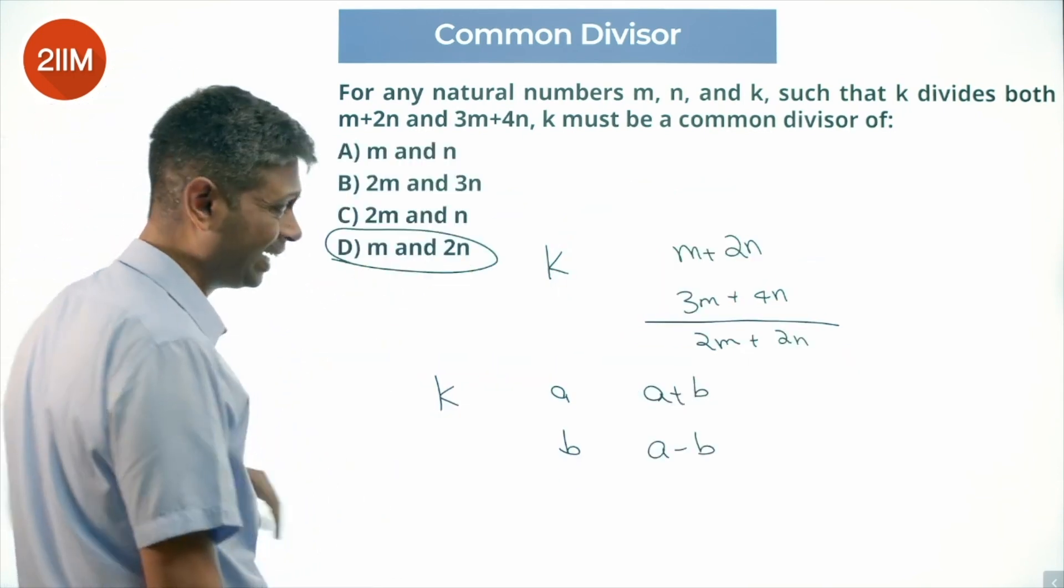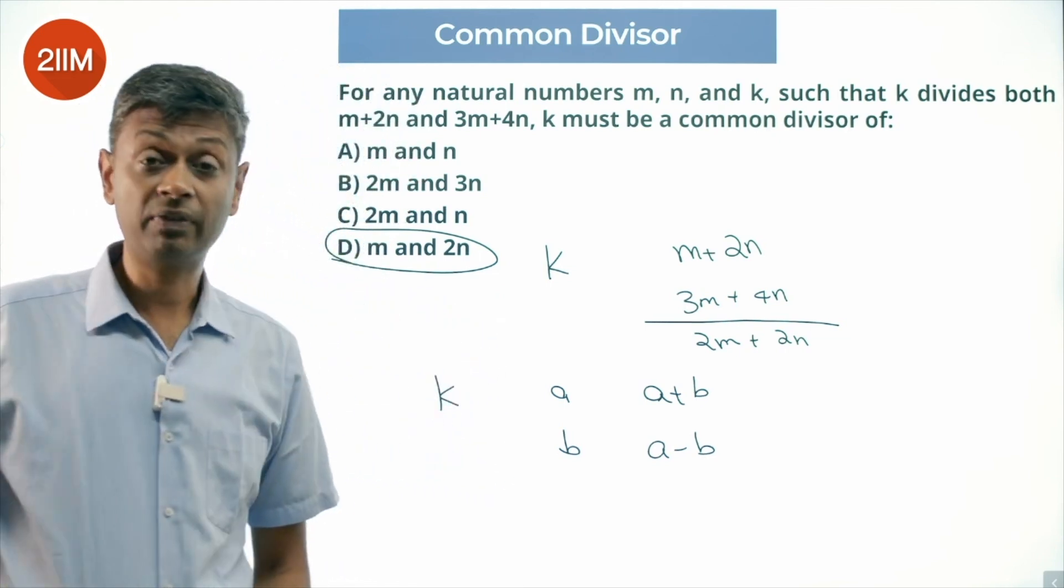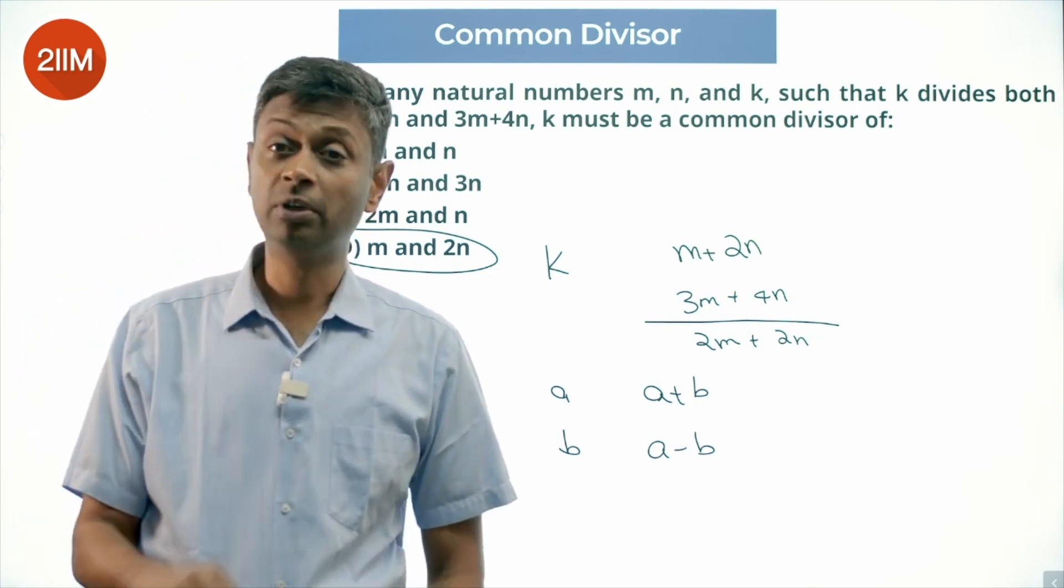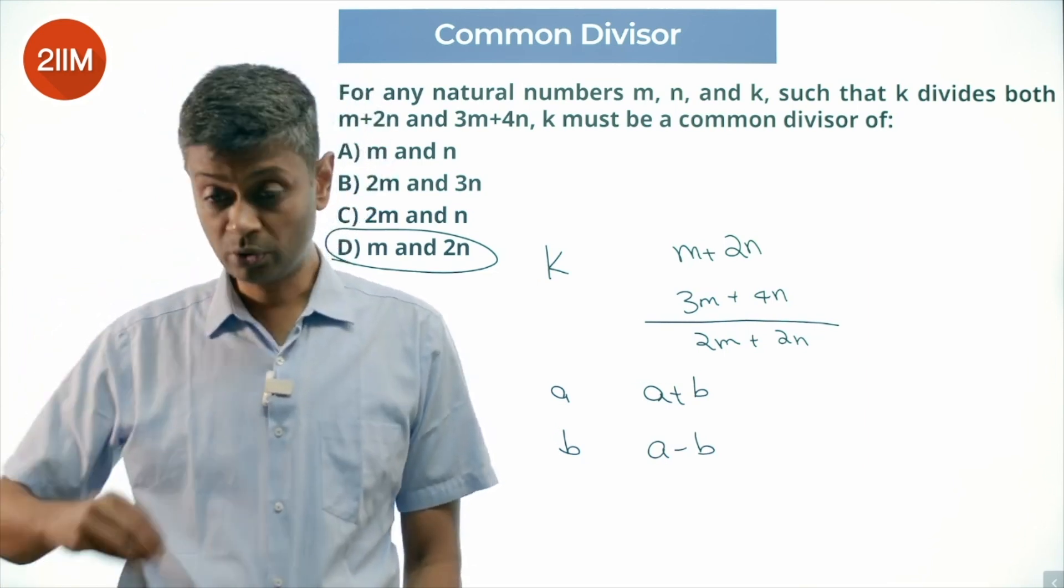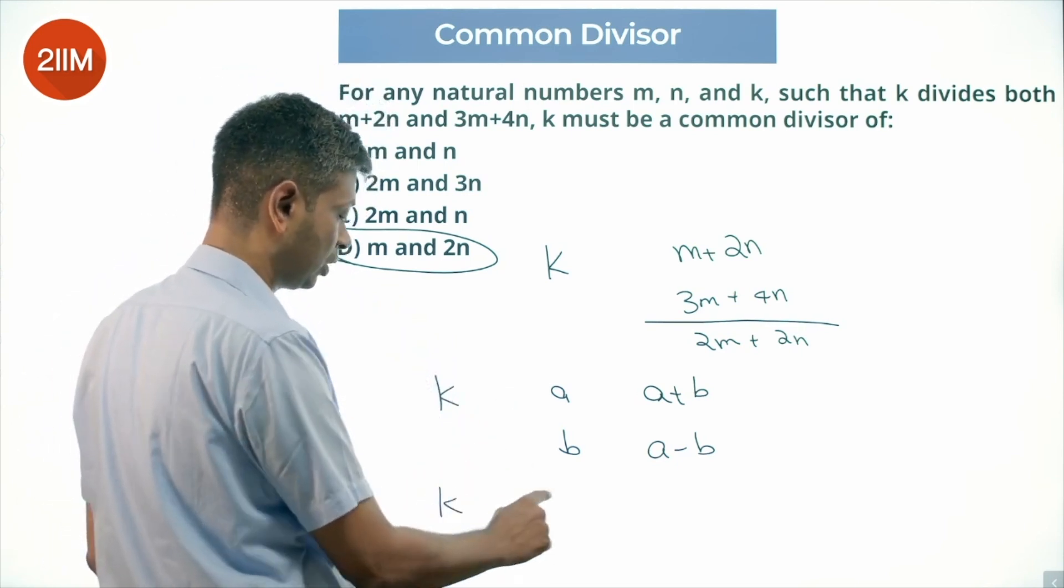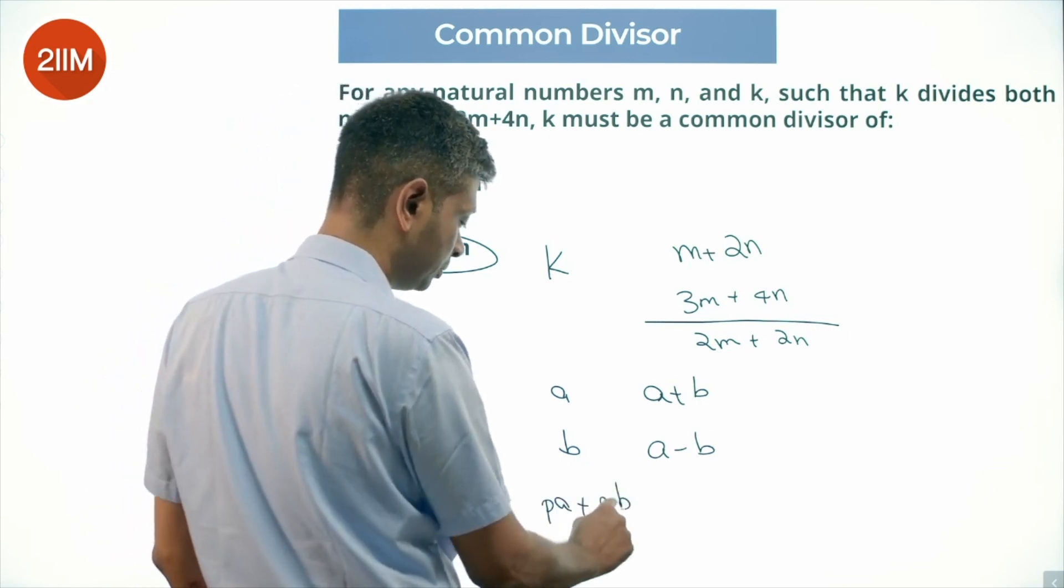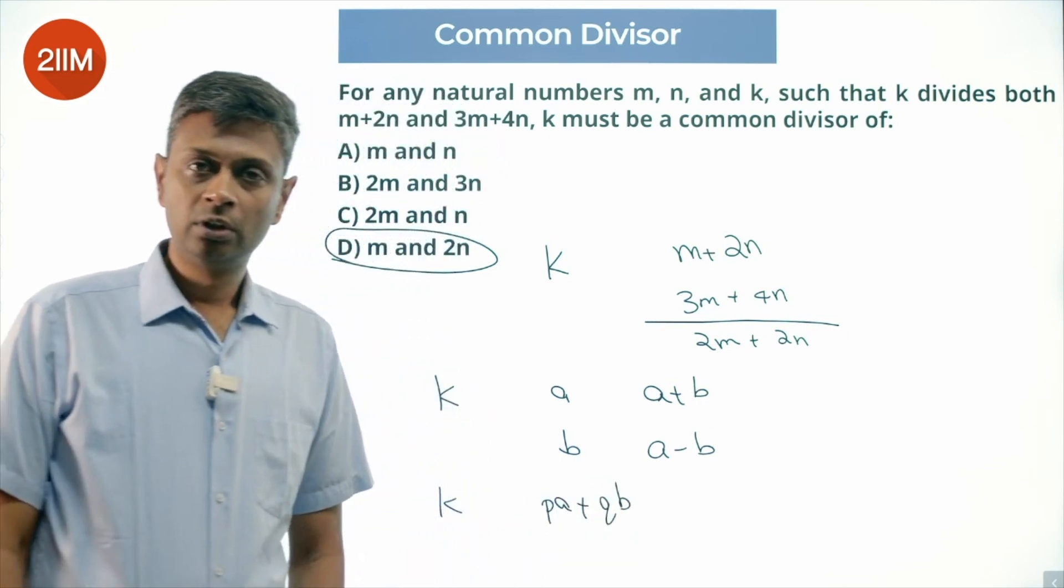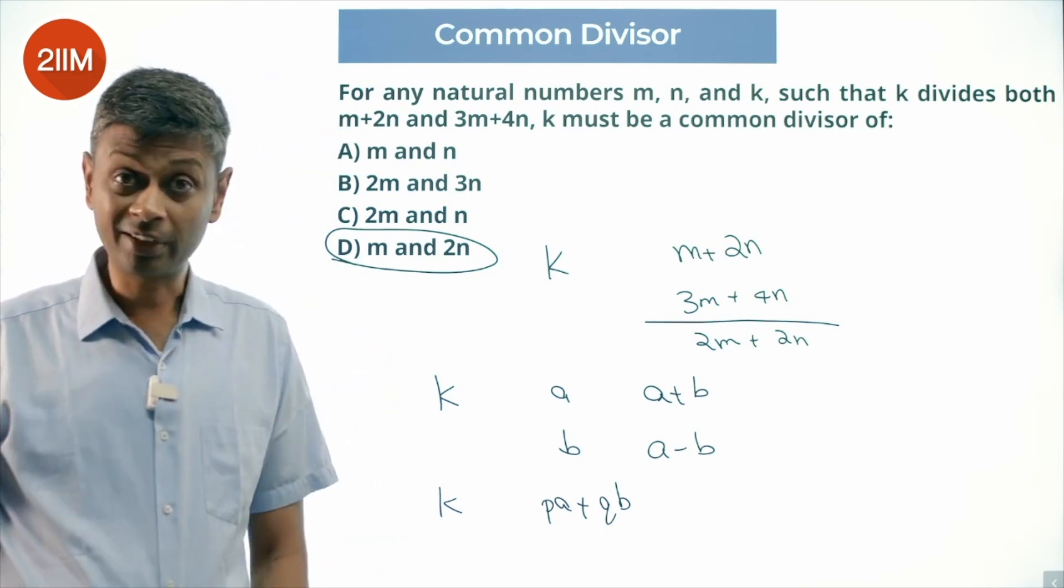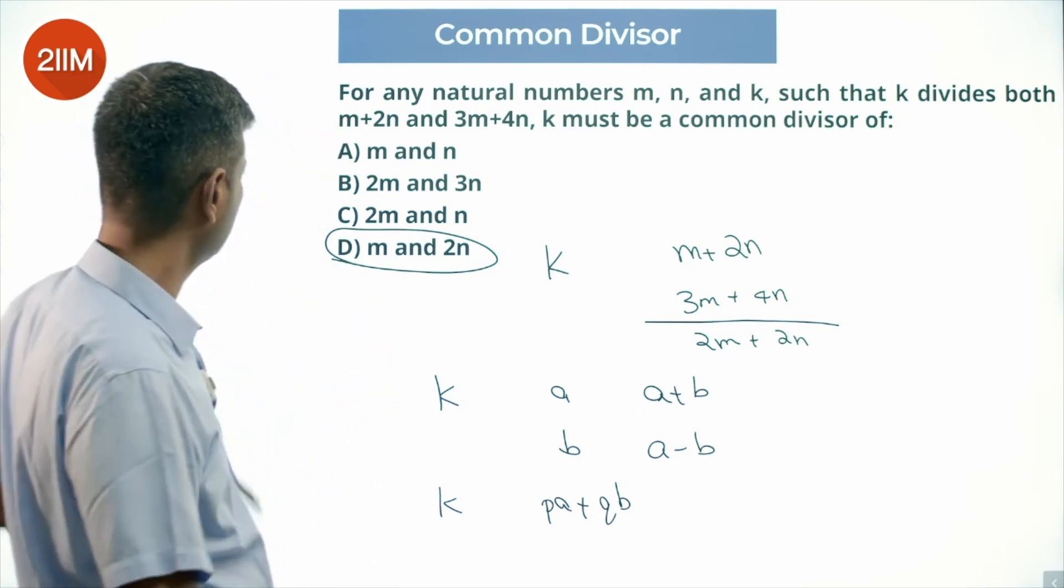The key idea we are using here: if K is a factor of A, K is a factor of B, K is a factor of any multiple of A, any multiple of B, K is a factor of sum A plus B, sum A minus B. K is a factor of PA plus QB, where P and Q are natural numbers or integers. It would be 5A minus 4B, it would be a factor of that. Nice, we are using that idea and then arriving at this.